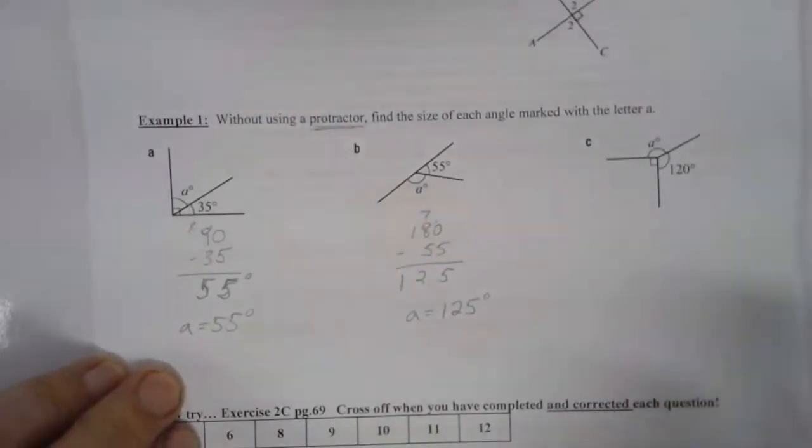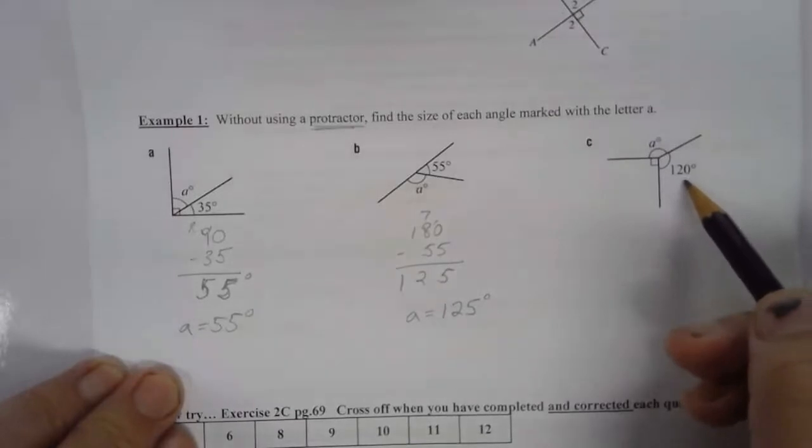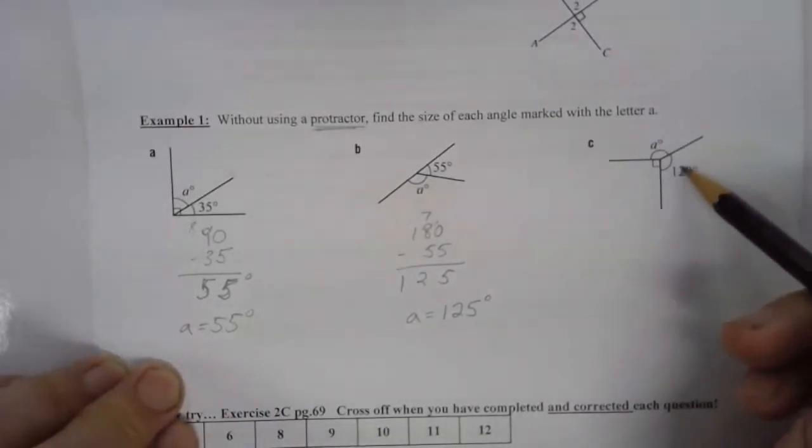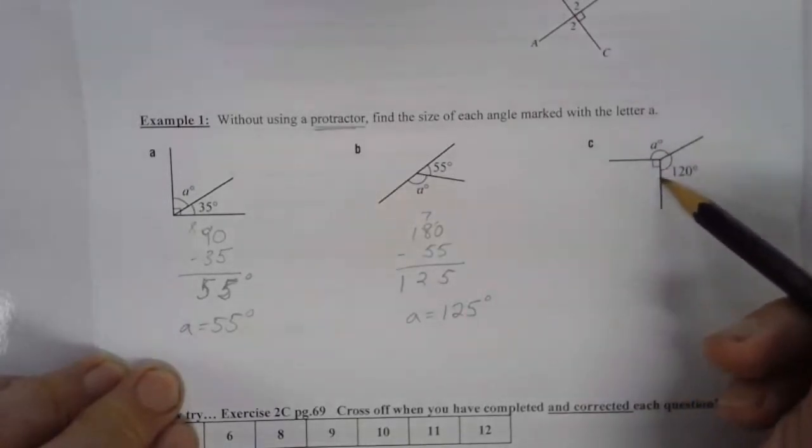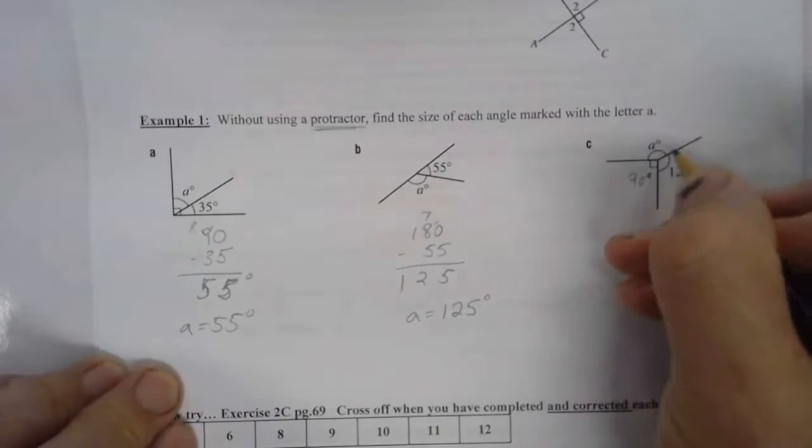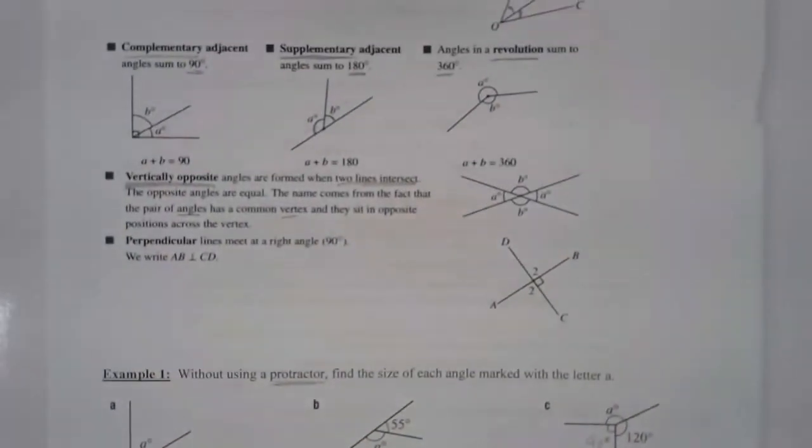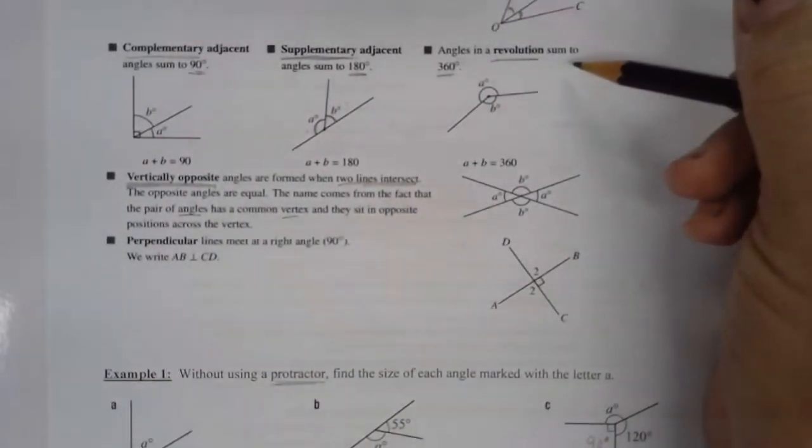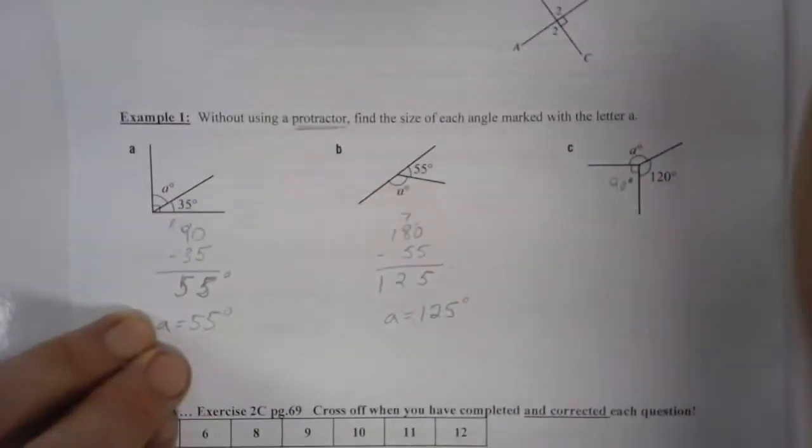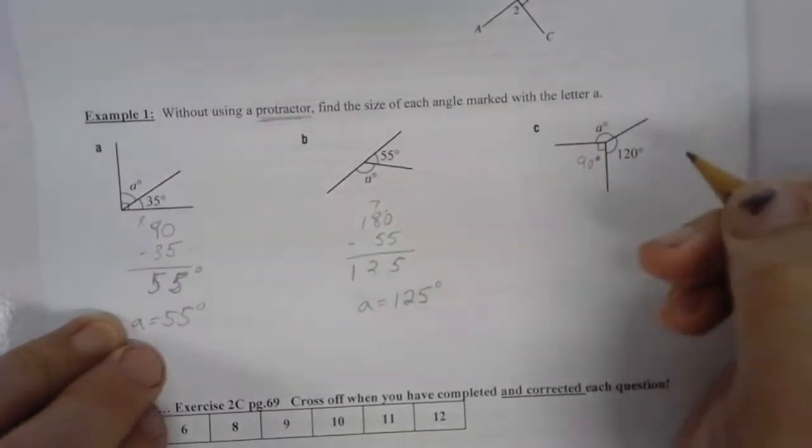Now finally over here, we've got some information. We've got this is 120 degrees. This is a right angle, so we know that's 90 degrees. And here is our question, what is A? And that brings us back to the angles in a revolution. So the total all the way around the vertex will be 360.